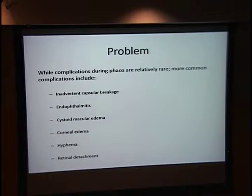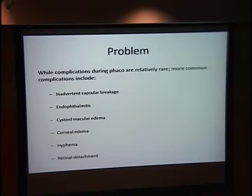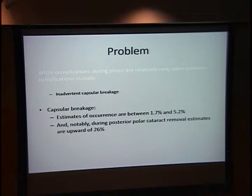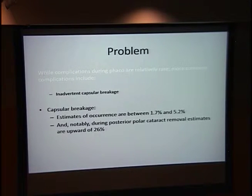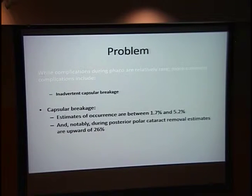While the complications are relatively rare with this surgery since it is so safe, some of the more common complications include inadvertent capsular breakage, infection of the eye, swelling of the back of the eye, corneal edema, blood in the eye, and retinal detachment. I wanted to focus a bit more on capsular breakage — it's feared among many residents and new surgeons. Capsular breakage occurs in about 2 to 5% of surgeries, and it becomes more important when you look at posterior polar cataracts, where it can occur almost 25% of the time.